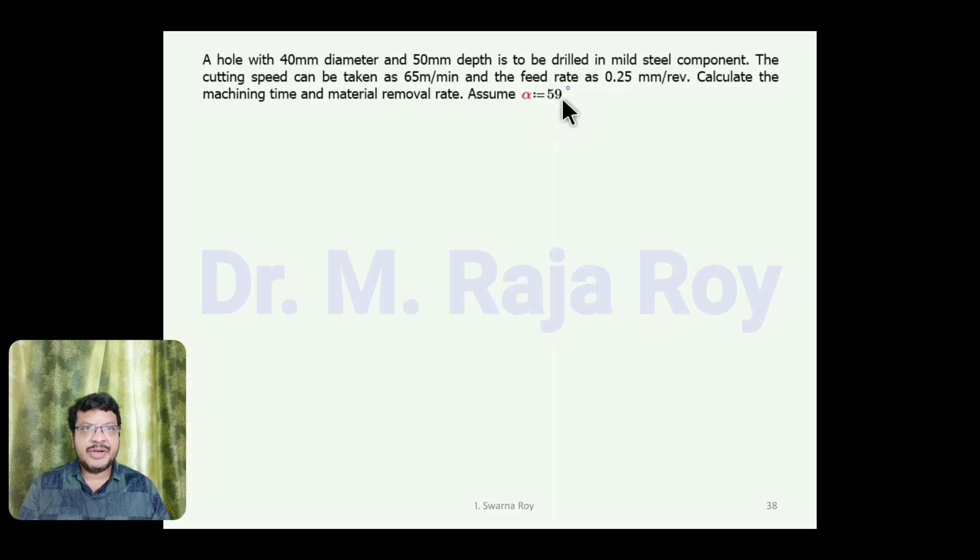Extract the given data: Diameter of the drill is 40 mm, length of the hole is 50 mm, velocity is 65 meters per minute, and feed is 0.25 mm per revolution.